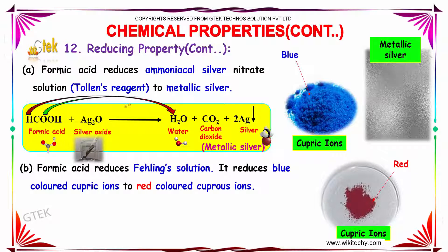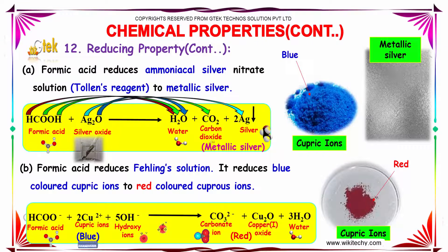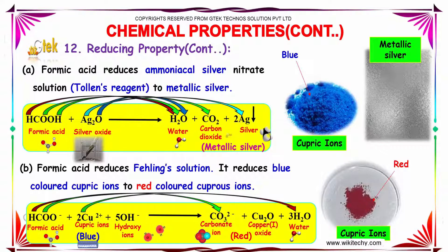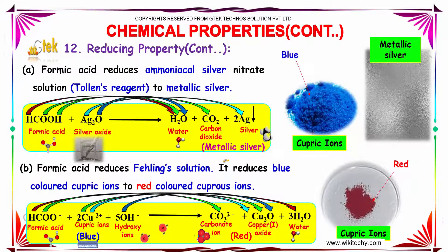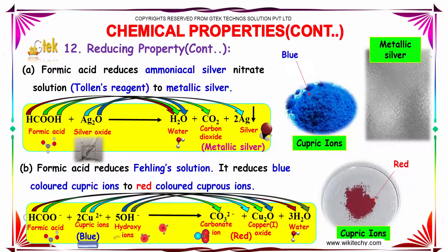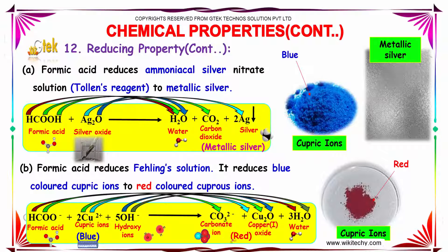Formic acid reduces ammoniacal silver nitrate solution to metallic silver. That is, formic acid when reacted with Ag2O produces H2O, CO2, and two molecules of silver. Formic acid also reduces Fehling's solution, reducing blue-colored cupric ions to red-colored cuprous ions. Formic acid when reacted with two moles of cupric ions along with five hydroxide ions produces carbonate ion along with copper(I) oxide and three molecules of water.